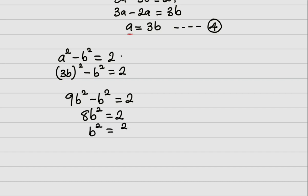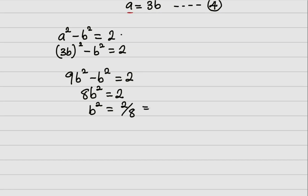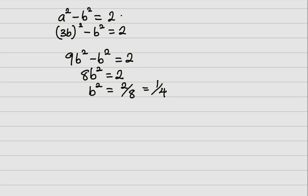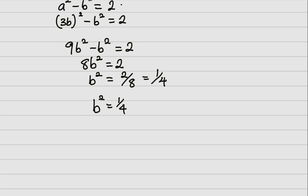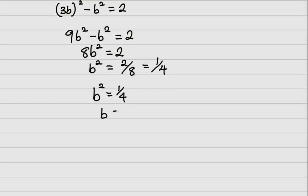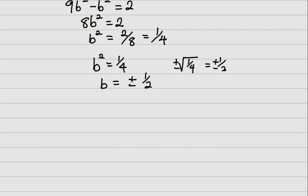Therefore, b² equals two over eight, which reduces to one over four in lowest terms. So b² equals one quarter. Square-rooting both sides, b equals plus or minus one over two, because the square root of one quarter is one half, with a plus or minus sign.